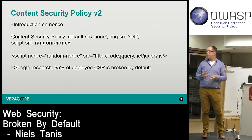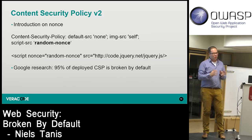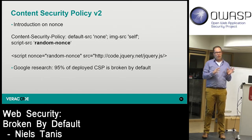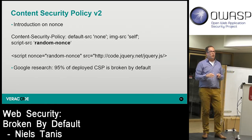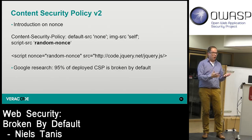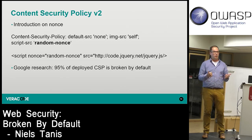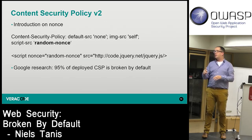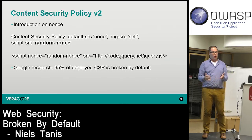Two or three researchers from Google presented at AppSec EU that 95% of currently deployed content security policies were broken — they did not matter at all. Be aware: CSP is not a fix for cross-site scripting, it is a mitigating control. Input validation and output encoding are still needed, but CSP is an extra layer because developers make mistakes.